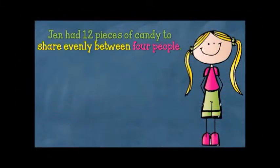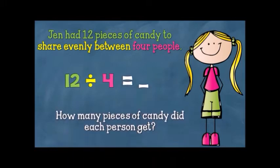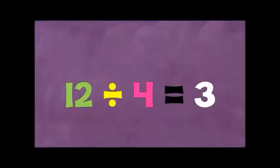So Jen had 12 pieces of candy — that's the total number of candies shared among 4 people. This is the equation we can write to solve this problem: 12 divided by 4 equals blank. This blank is how many pieces of candy each person got. We read the equation this way: 12 divided by 4 is equal to 3.